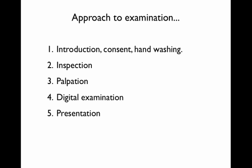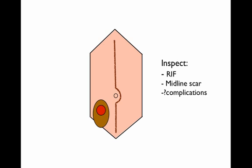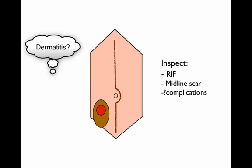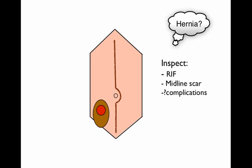Now, we'll briefly mention examination. Obviously, there's no replacement for examining a patient, examining stomas, but we'll just quickly run over a simple approach. Here is our patient as an example, and the first thing we're going to do is inspect. The stoma lies in the right iliac fossa. We can also observe a midline laparotomy scar, and at this stage, we should be looking for those complications. Can we see any dermatitis? Is there any evidence of any lumps around the stoma, suggesting a hernia?